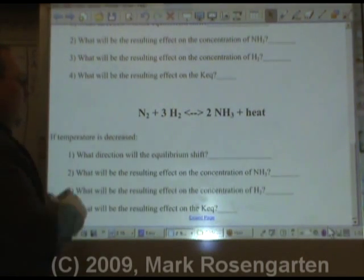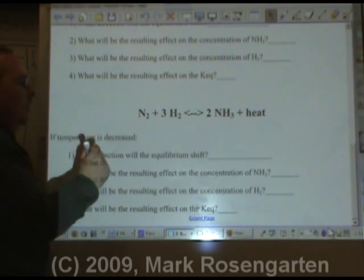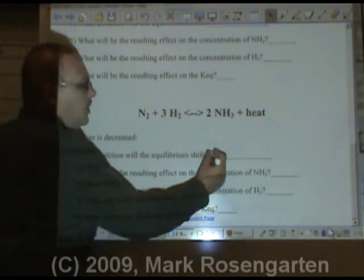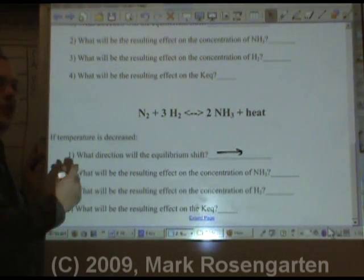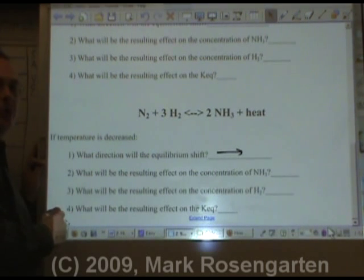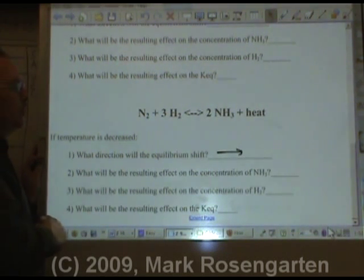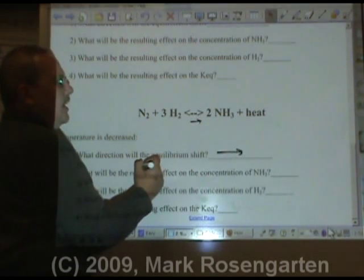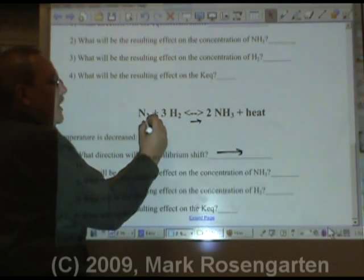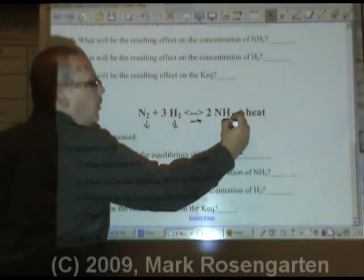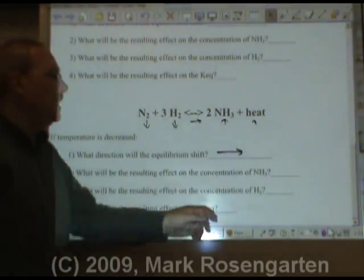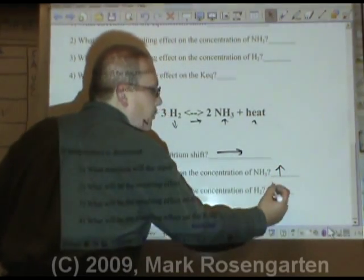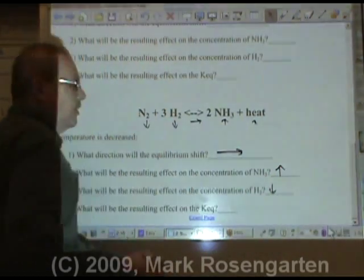For this reaction, if you decrease the temperature, the equilibrium will shift towards heat to bring the temperature back up again — shifting towards heat, the exothermic direction. If you're shifting towards NH3, the reactants are getting used up and making more of that. Therefore, the concentration of NH3 will increase as your reactants are used up.